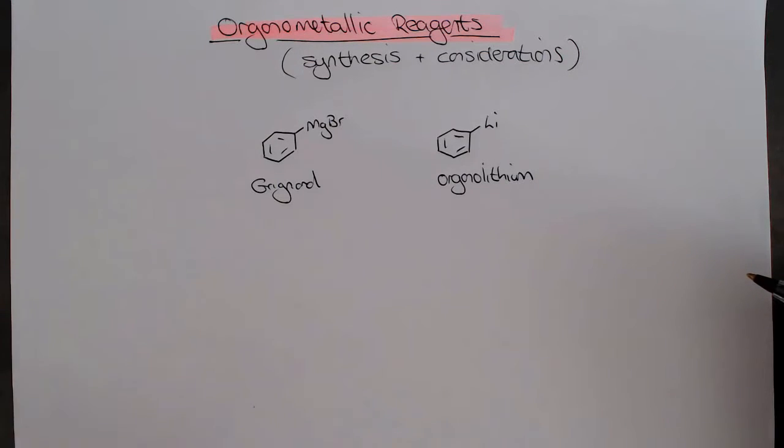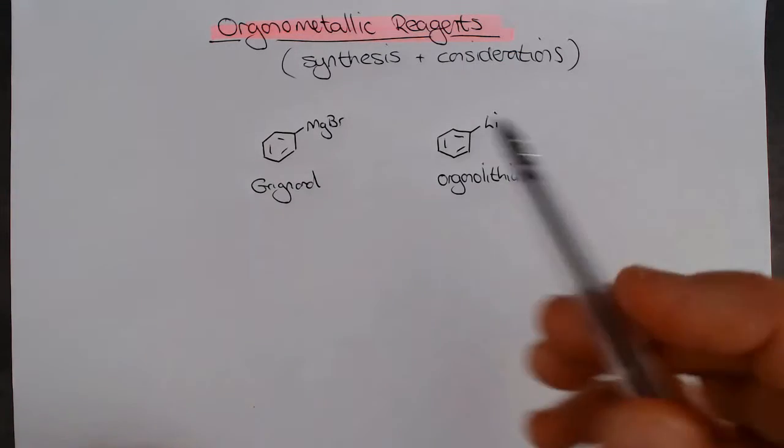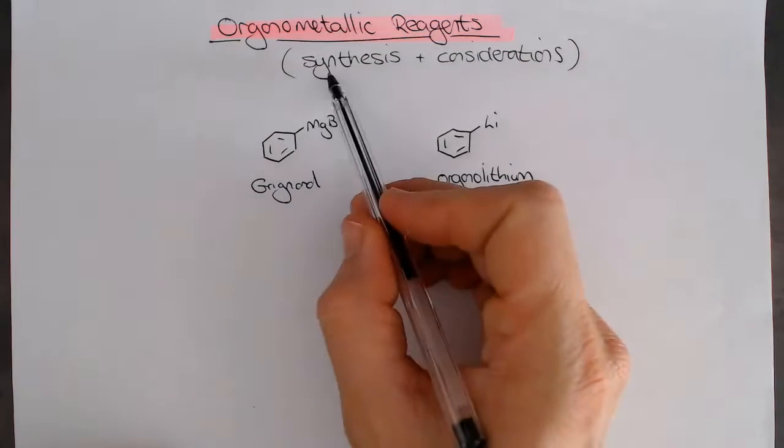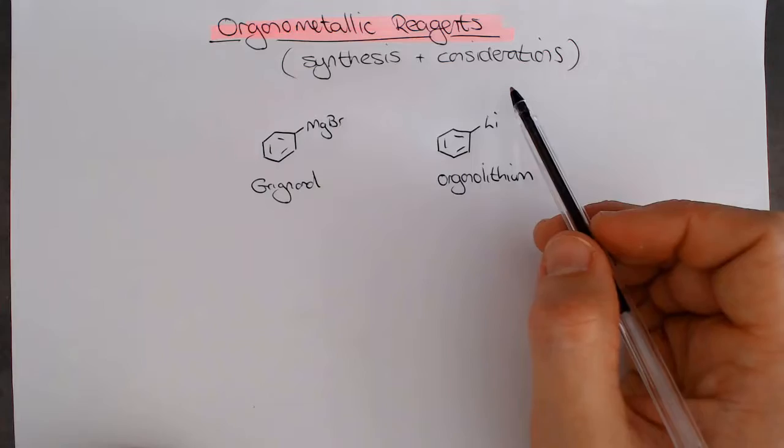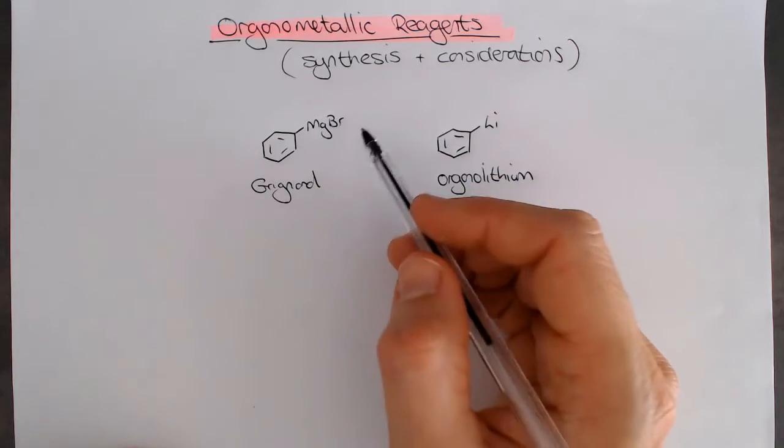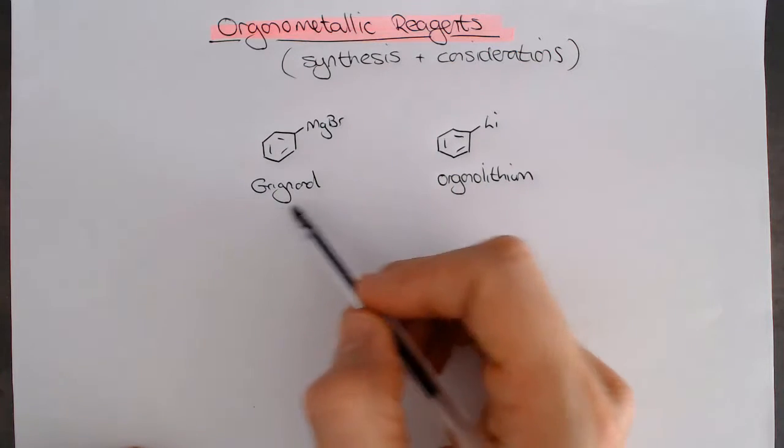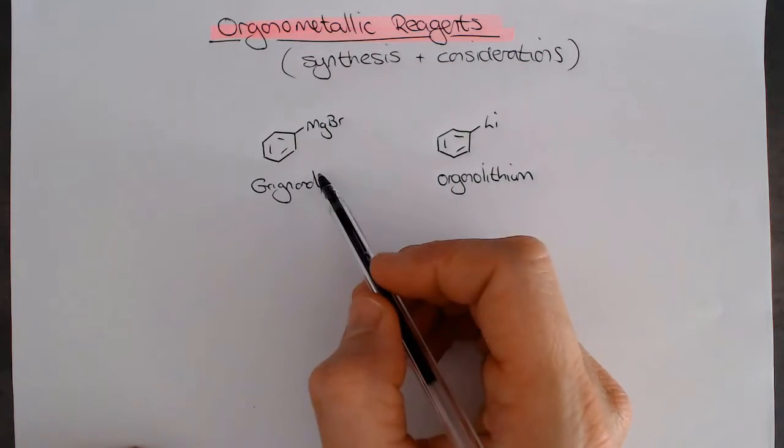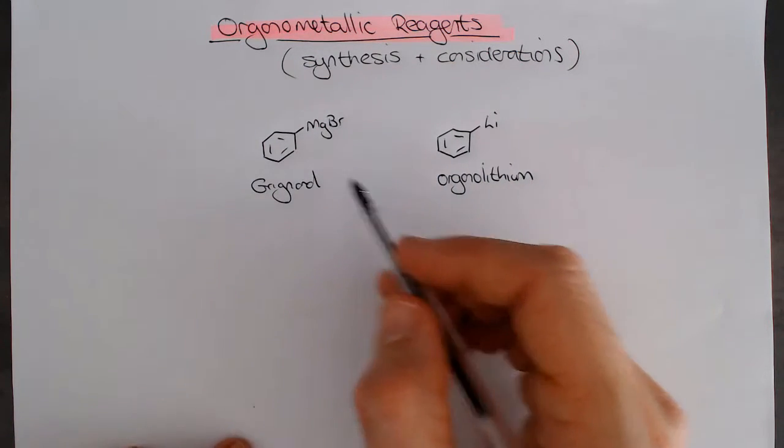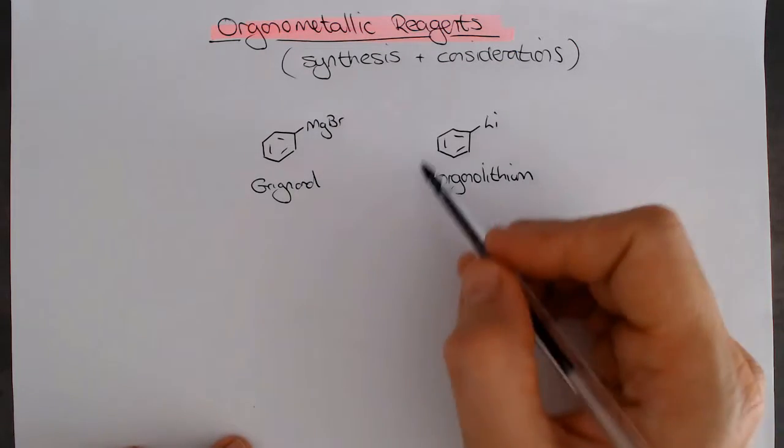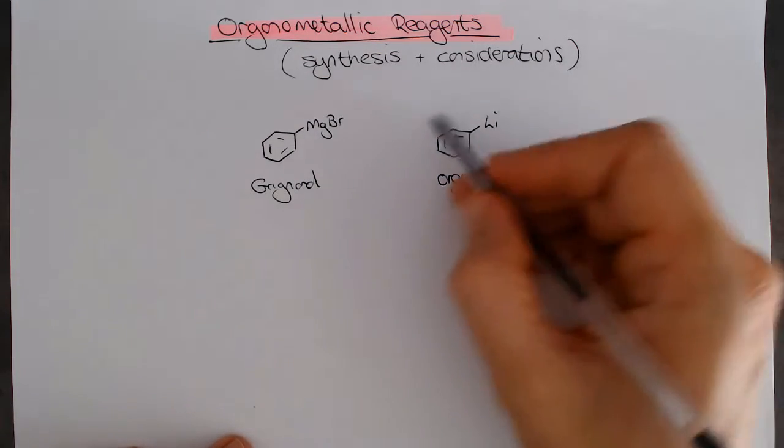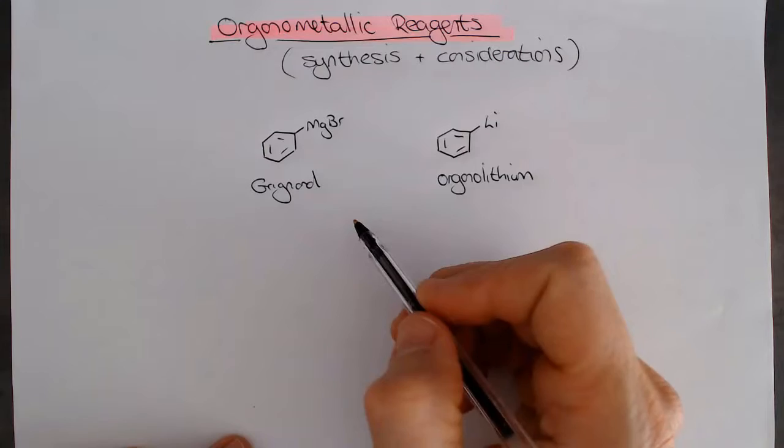Alright, so we're going to start looking at organometallic reagents, particularly in this lecture, just the synthesis of them and their considerations. Now, organometallic reagents are probably the one that you are most familiar with at this point, and you've seen it in the first year, are your Grignard reagents that look something like this. But we're also, in this course, going to be looking at organolithium reagents, which are very similar to Grignard reagents.